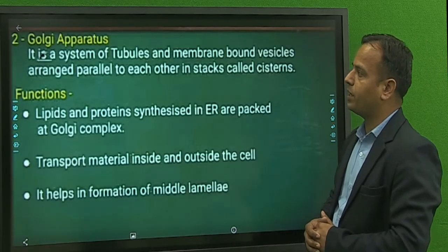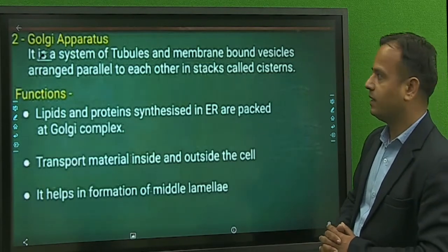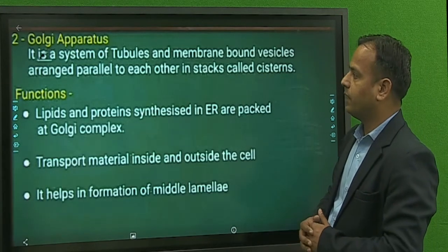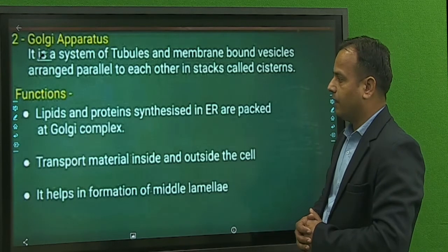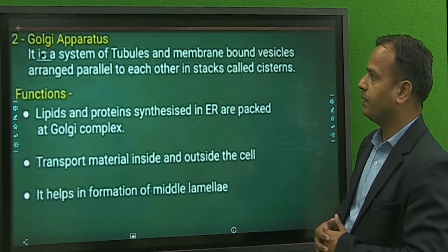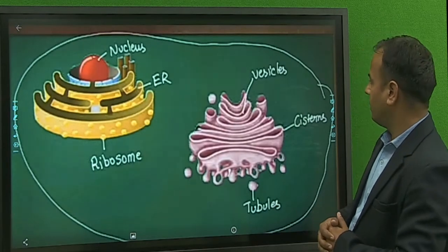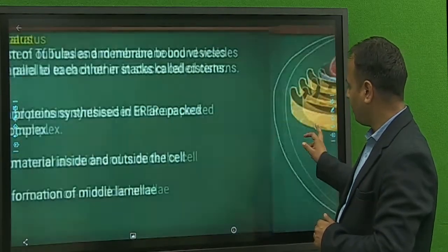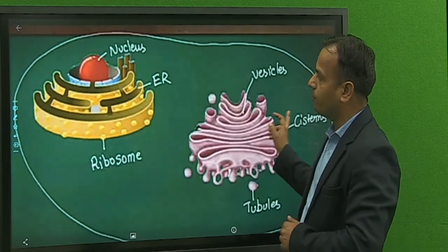Golgi apparatus is an important cell organelle present in plant cells. It is a system of tubules and membrane-bound vesicles arranged parallel to each other in a stack called cisternae. Function: Lipids and proteins synthesized in the endoplasmic reticulum are packed at the Golgi complex and transport material inside and outside the cell, and help in the formation of the middle lamella. The structure includes vesicles, cisternae, tubules, ribosomes, nucleus, and endoplasmic reticulum.